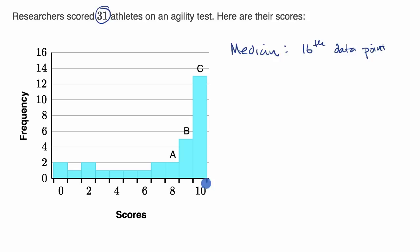So we could just think about which interval here contains the 16th data point. You could view it for the 16th from the highest, or the 16th from the lowest. It is the middle one. So let's start from the highest. This interval C contains the 13 highest data points, and then interval B goes from the 14th highest all the way to the 18th highest. So B contains the median. It contains the 16th highest data point, or if you started from the left, it would also be the 16th lowest data point. So that's where the median is.